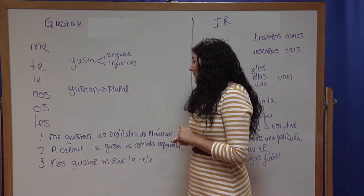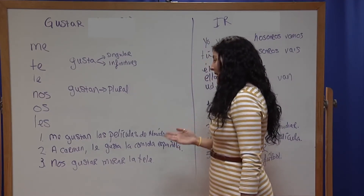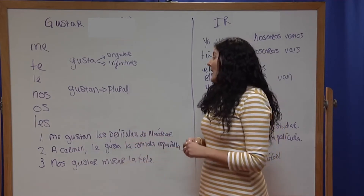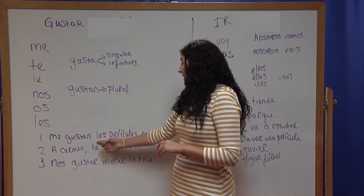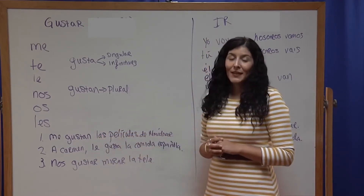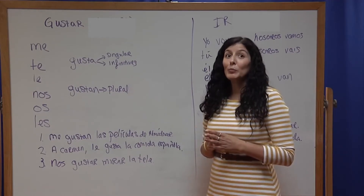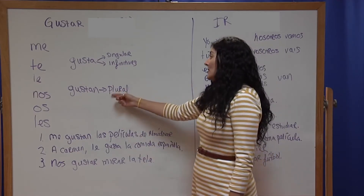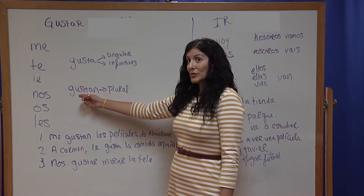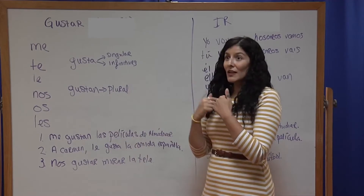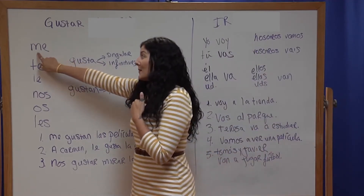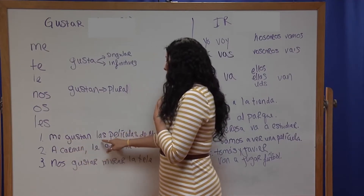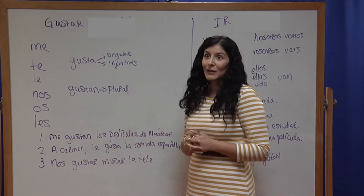Let me give you an example. Let's say I wanted to say 'I like Pedro Almodóvar's movies.' I would want to say I like his películas. But películas is plural, and I'm talking about myself, so I would need to use the plural form of gustar and the pronoun for myself, which is me.